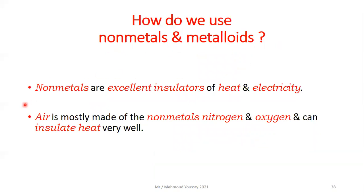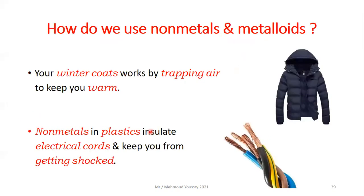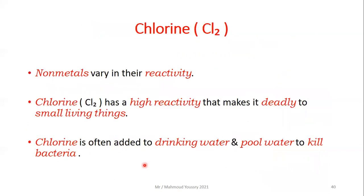Non-metals are excellent insulators of heat and electricity. Air is mostly made of non-metallic nitrogen and oxygen and can insulate heat very well — your winter coat works by trapping air inside. Non-metals in plastics insulate electrical cords: the copper wires in your home are covered in plastic made of non-metal elements, which keeps you from getting shocked.